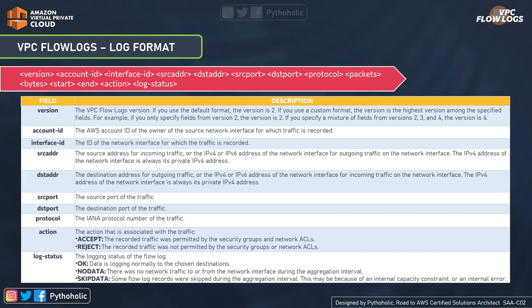Now let's look at the log format. The syntax of the flow log contains a lot of information, but here are a few important ones. The first is version — the VPC flow log default format specifies version 2. It will choose the highest version among the specified fields, so if you specify a mixture of fields from versions 2, 3, and 4, it will pick the highest number — version 4 — as the log version.